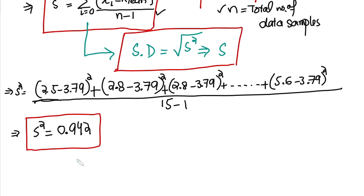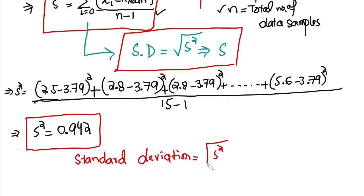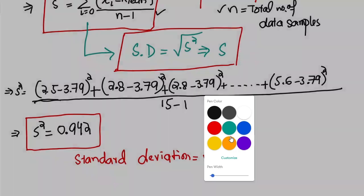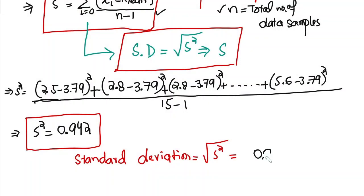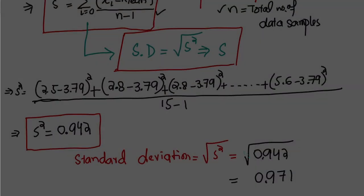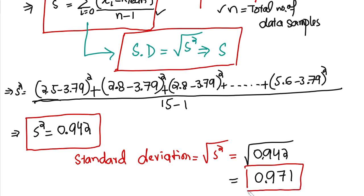After finding the variance, we also have to find the standard deviation. To find it, we take the square root of s-squared, which is the square root of 0.942, and if we calculate it we get approximately 0.971. This is the value of the standard deviation, which is represented by s.